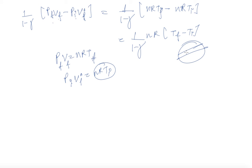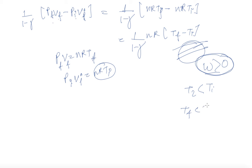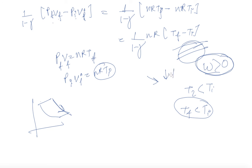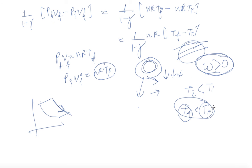As expected, when work is done by the gas in an adiabatic process and work done is greater than 0, then T_final is less than T_initial. Looking at the graph, the curve goes down, meaning there is a decrease in energy. Since no external energy is supplied to the system, work is done using the internal energy of the system. Therefore the temperature drops, and T_final is less than T_initial.